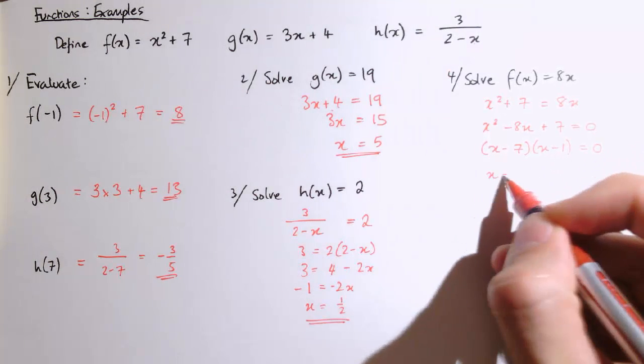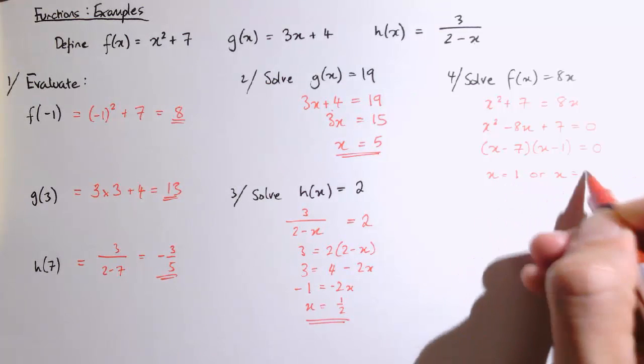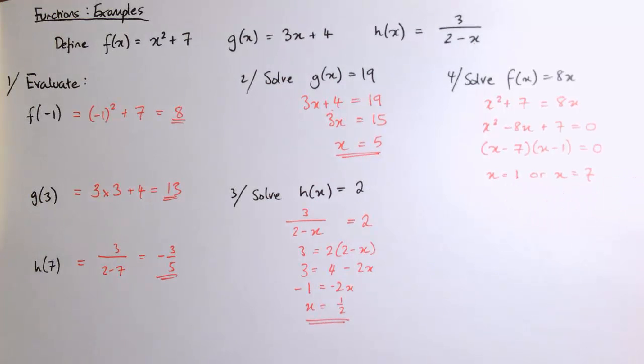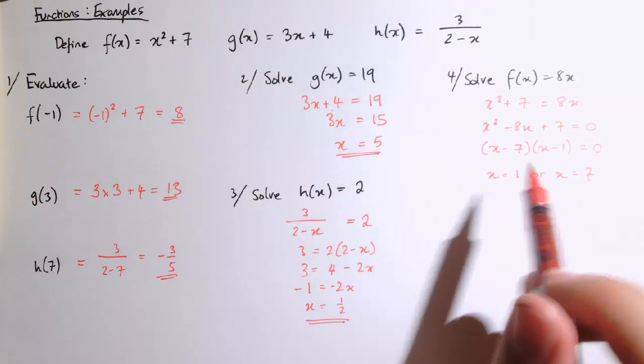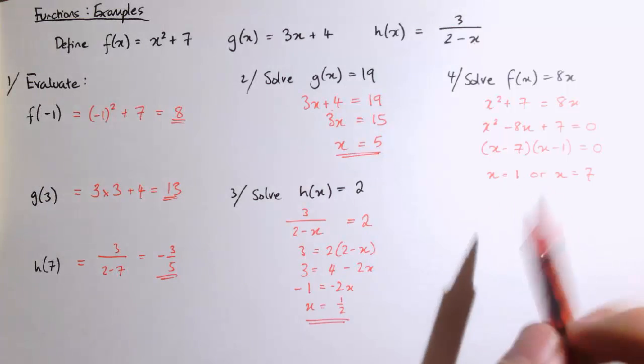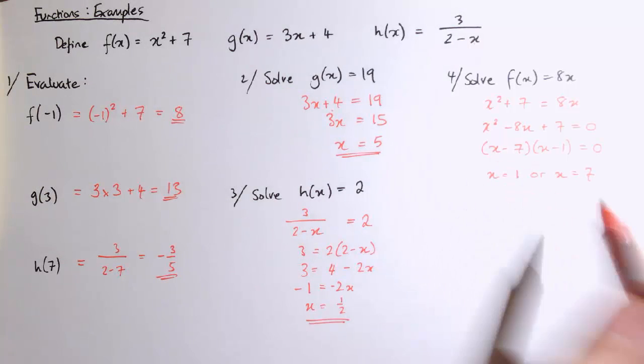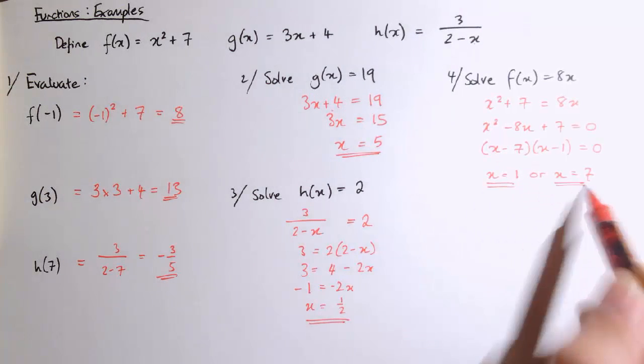And so that means that either x equals 1 or x equals 7. If you haven't done quadratic equations yet, don't worry too much about the details there, or you can look at the videos on quadratic equations. But we found two values that solve this equation: x equals 1 or x equals 7.